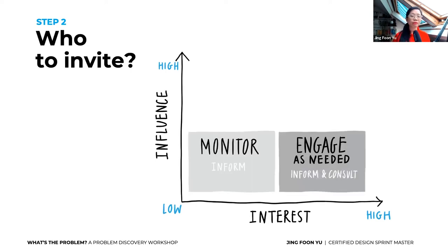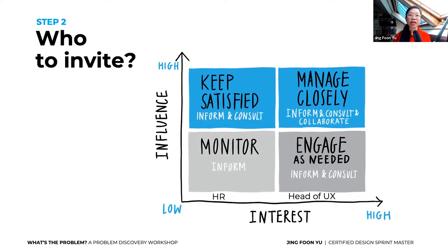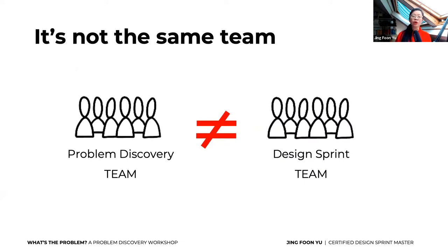You have groups of people you monitor or engage as needed — maybe HR people or the head of UX. But you also have groups you need to keep satisfied and manage closely — commonly CEOs and VP of Products. These blue groups I would definitely invite for the problem discovery workshop. Normally a director or CEO would not be part of your design sprint, but these are exactly the people you want in a problem discovery session — they have the power to stop or start a project.